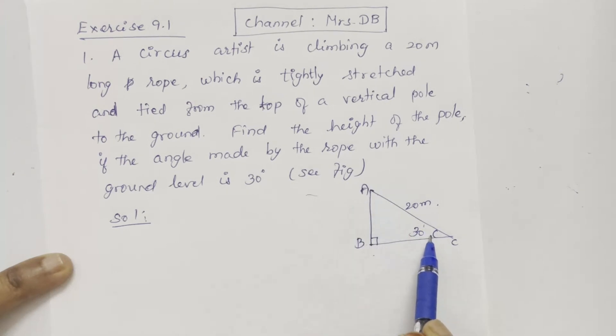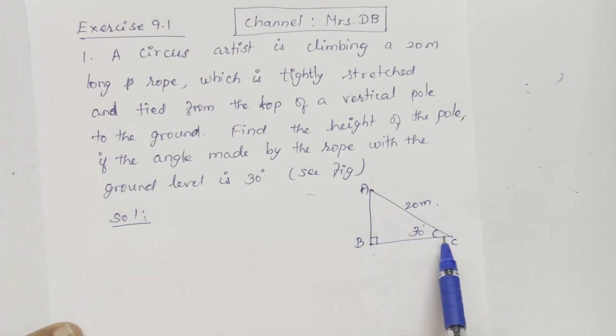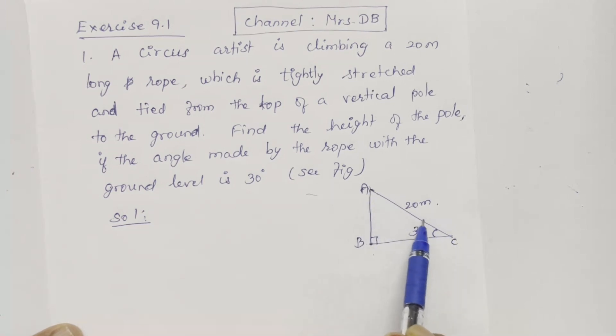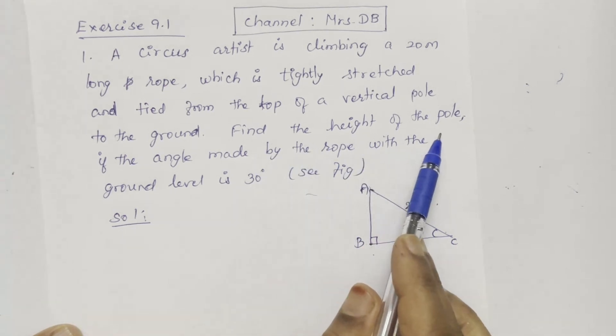See the figure. One circus artist is on a rope and the rope is oriented. One pole is at the top and the rope is at another side of the ground. There is a slanting and you can see the height of the pole.